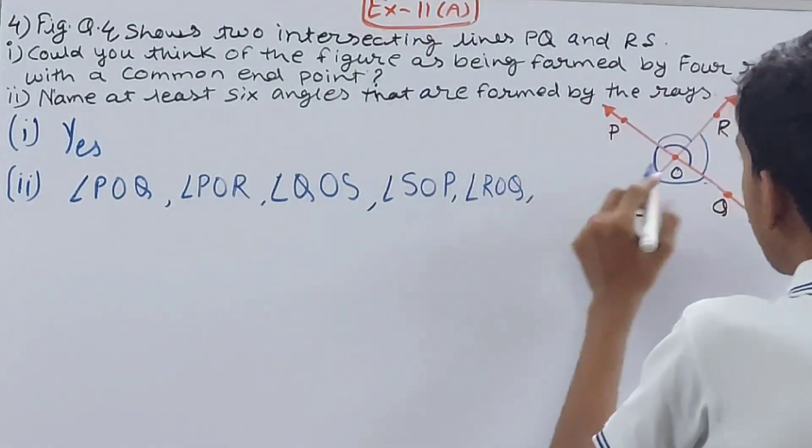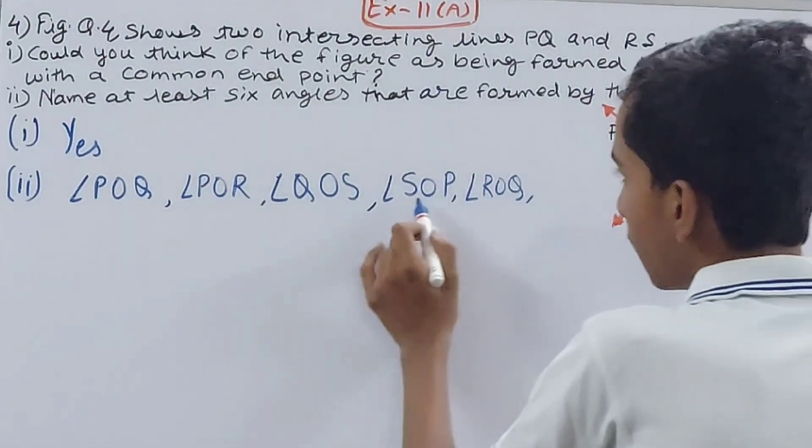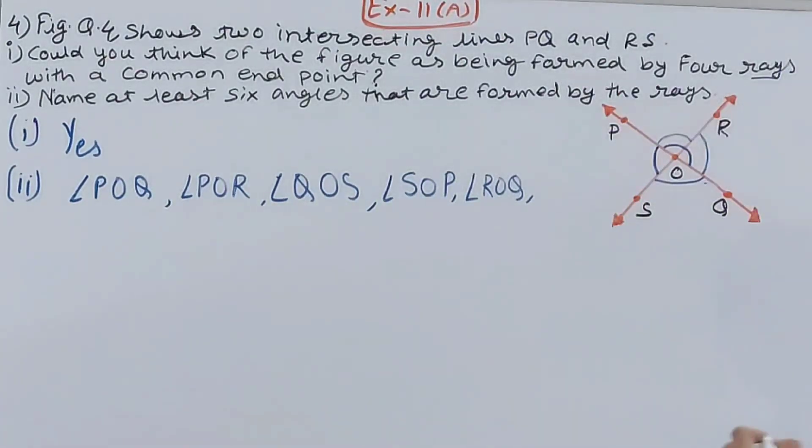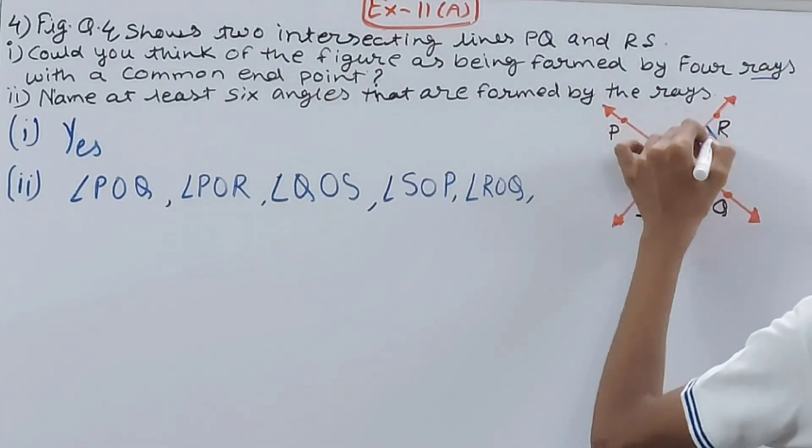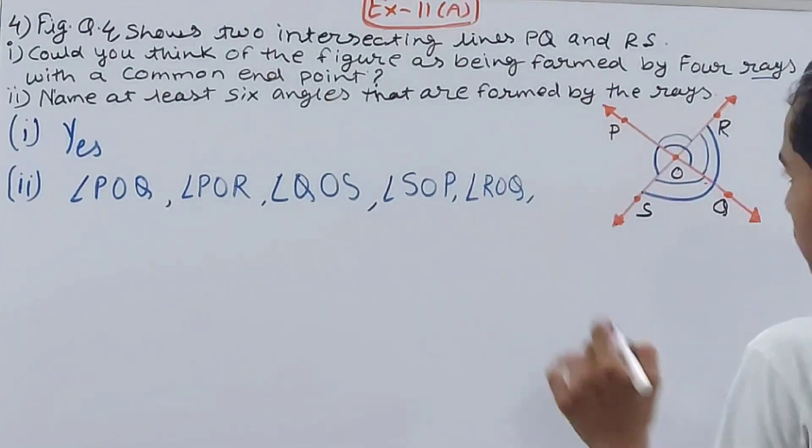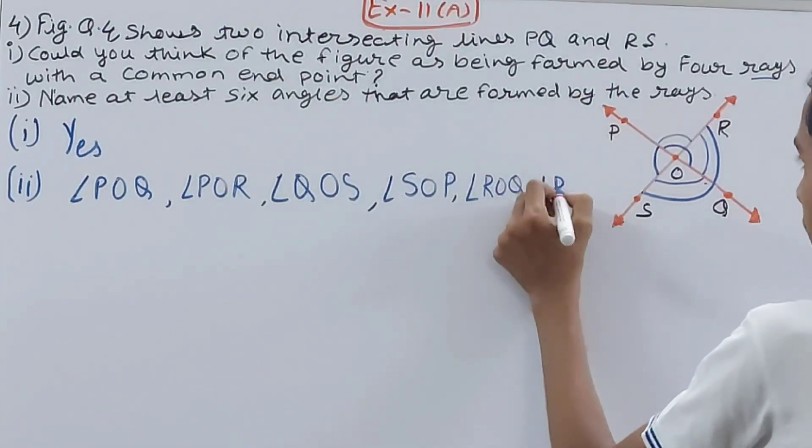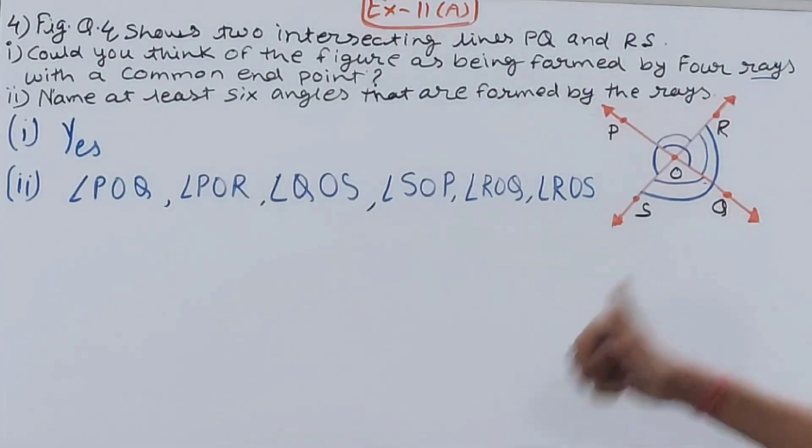Angle ROQ, and then last one. How many done? One, two, three, four, five. Last one I'll take this way: angle ROS. Simple.